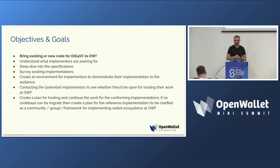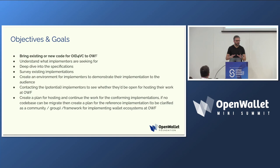We are still surveying existing implementations. We have a large sheet where we have feature sets mapped against existing implementations, so people can compare what's in it for them. It also helps implementers figure out where there are gaps, what is missing, and what they need to do next. We also provide implementers of projects not yet at OWF a space to demonstrate their implementations, with the intent to convince them to come and join the team. We are contacting those implementers to figure out whether OWF would be a good place for hosting their work.